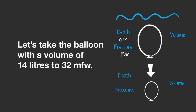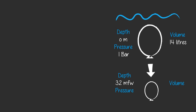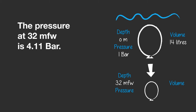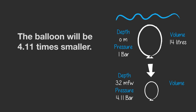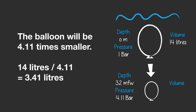Now let's take the balloon with a volume of 14 liters down to 32 meters of freshwater. The pressure at 32 meters of freshwater is 4.11 bar. 32 meters divided by 10.3 equals 3.11 bar, plus 1 bar of the surface pressure equals 4.11 bar in total. So the balloon will be 4.11 times smaller. 14 divided by 4.11 equals 3.41 liters.